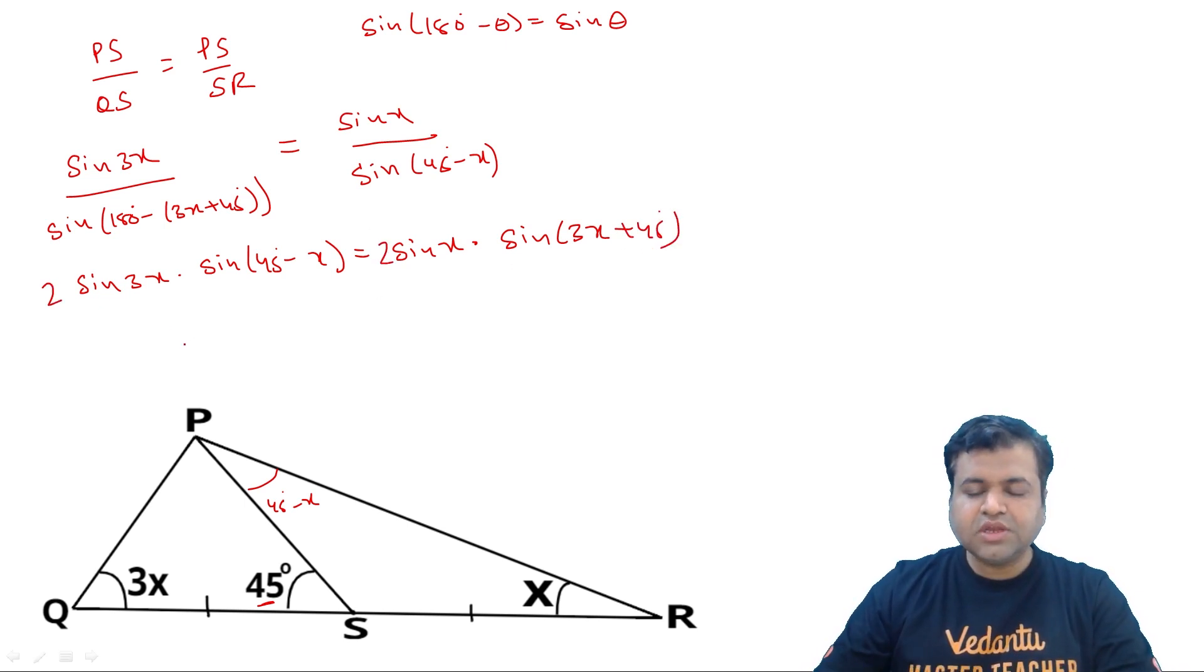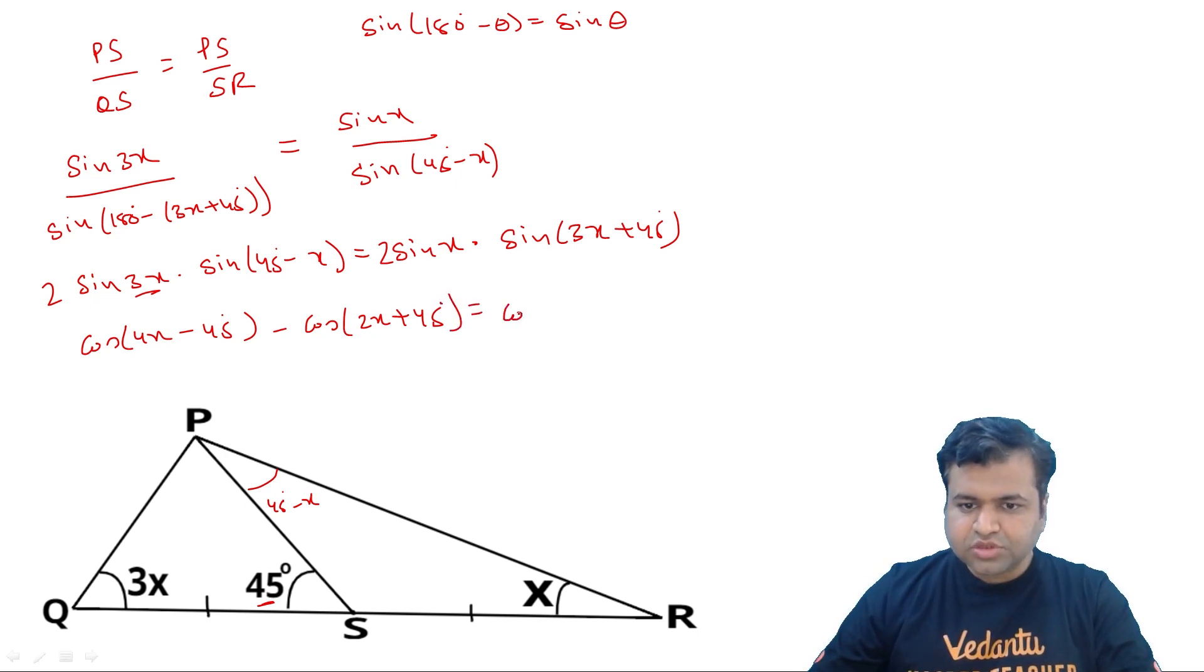So let's cross multiply it. We will get sin 3x times sin 45 degree minus x. That will be equal to sin x multiplied by sin 3x plus 45 degree. Now just multiply both sides by 2. Because you know 2 sin a sin b ka formula hota tha. That will be cos of a minus b. That is nothing but cos of 4x minus 45. Cos of a minus b, minus cos of a plus b. So that will be cos of 2x plus 45.